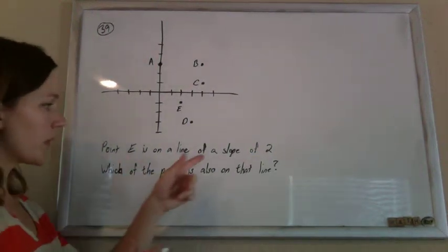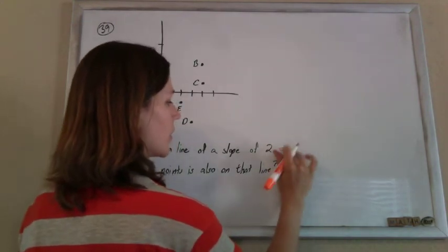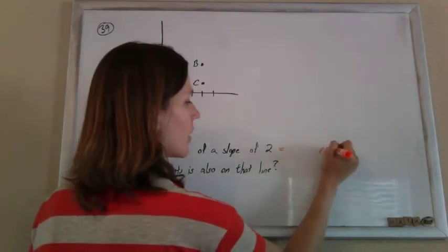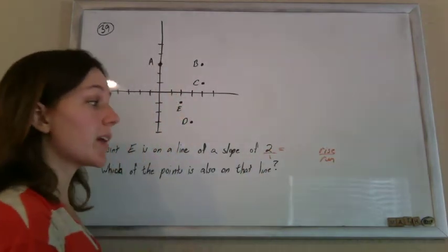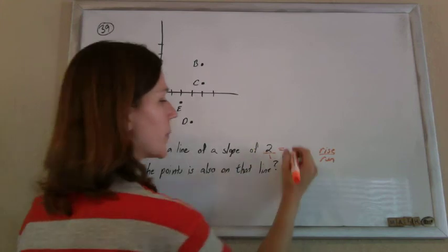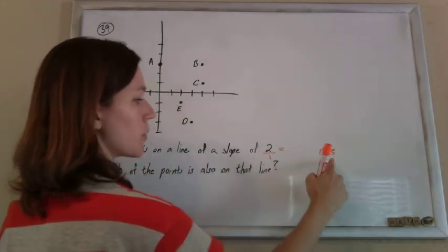They tell me that I have a slope of 2. Now remember, slope is the rise over the run. I can rewrite 2 cleverly as 2 over 1. So my rise is 2 and my run is 1.